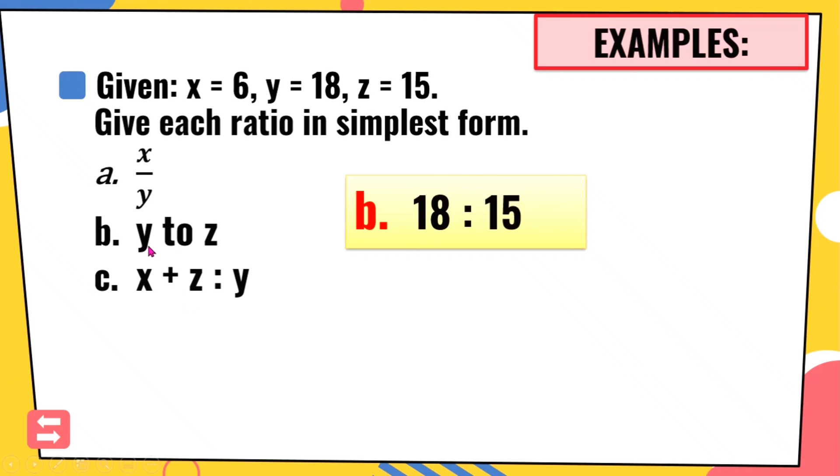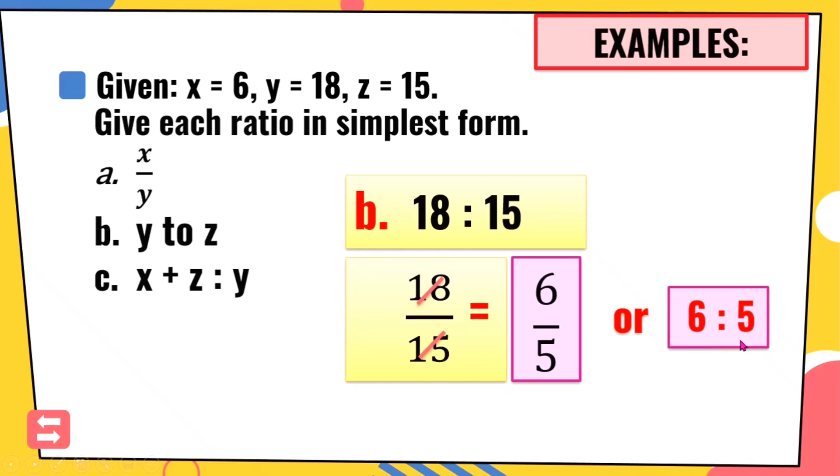Letter B, Y to Z. Meaning, get the value of Y, which is 18. 18 is to Z. So the value of Z is 15. So 18 is to 15. We're going to write it into fraction, para mas madali natin ma-lowest term. So ano ang pwede i-divide sa kanila pareho? Tama kayo. Pwede natin silang i-divide sa 3. 18 divided by 3 is 6, and 15 divided by 3 is 5. So the simplest form of 18 is to 15 is 6 over 5, or 6 is to 5.